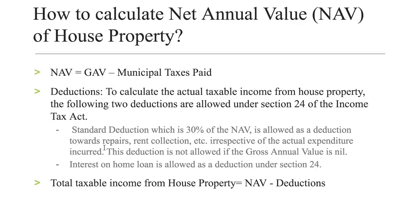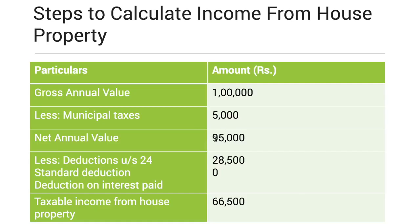The first deduction is standard deduction. The Income Tax Department of India allows this deduction because for a house property, we would have spent money on many things — for example, repair work, enhancement work, and so on. So the Income Tax Department allows 30 percent of the net annual value as deduction. Thirty percent of 95,000 is 28,500 rupees.